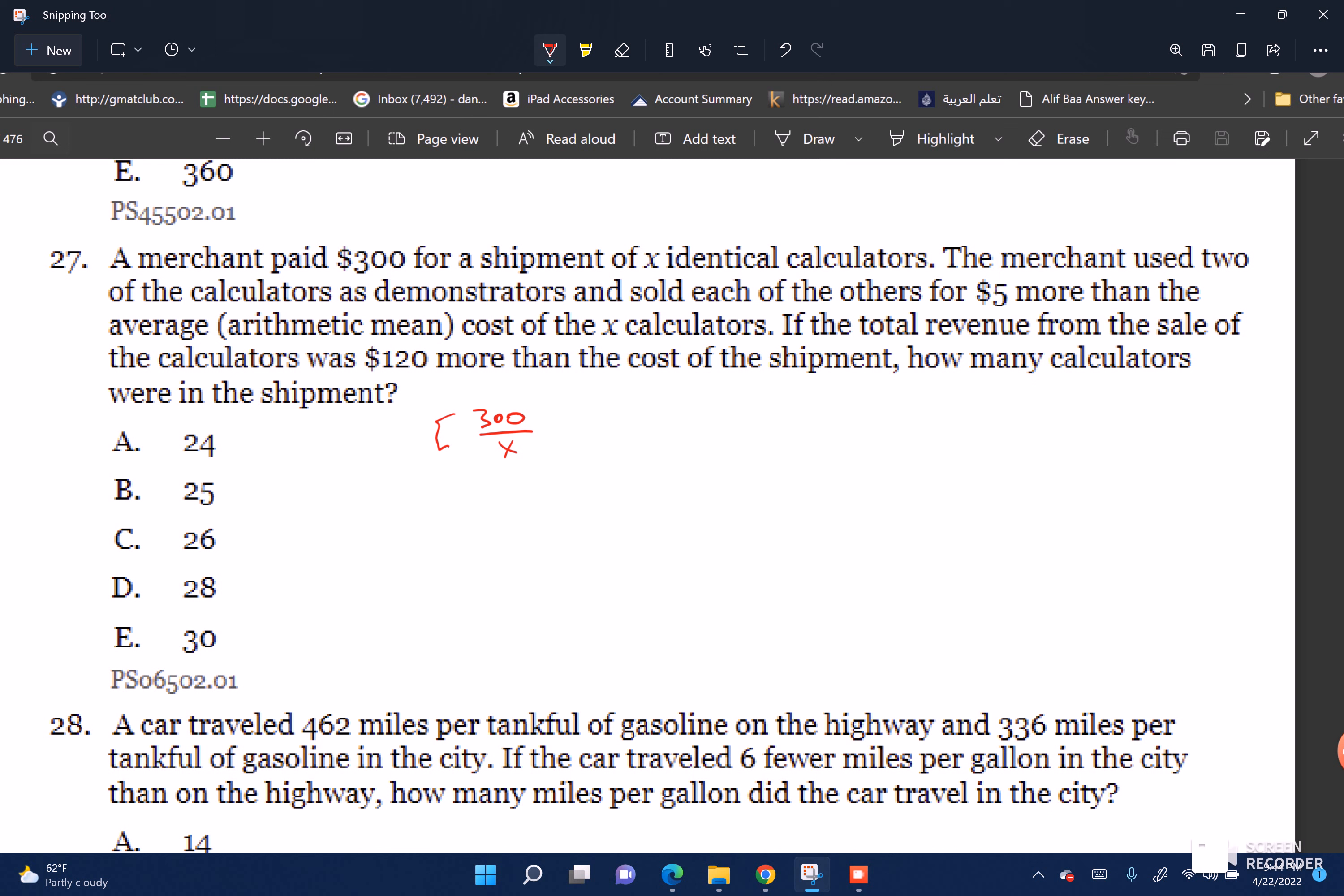To get total revenue, we do quantity times price. The quantity times the price equals 420, because it's $120 more than the original cost, so 300 plus 120.